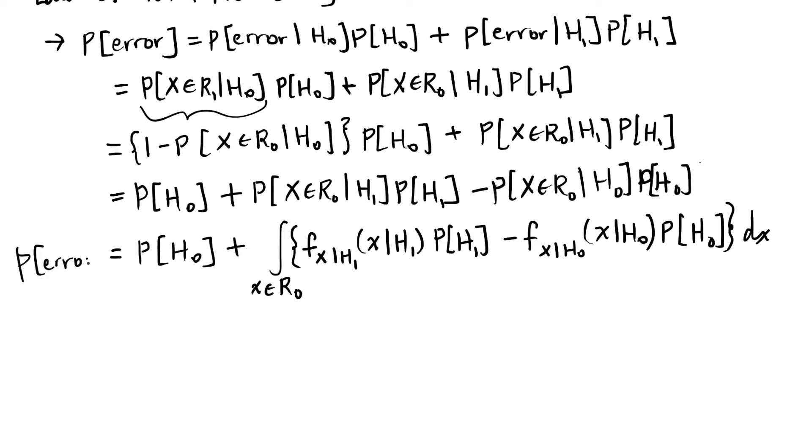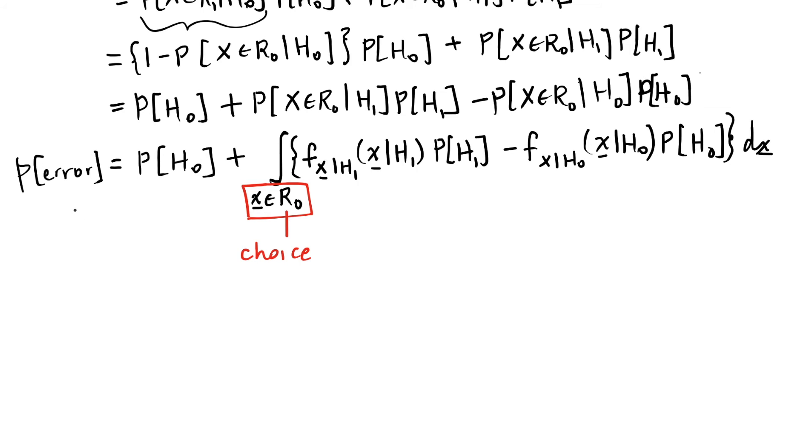We want to minimize this probability of error. And the only choice that we have here is this R0, we can only choose what R0 is. We can make a choice about where, what values of X we want to integrate. And I should note here that X is still a vector, so I should be writing it as a vector like this. And this might be a double integral or triple integral depending on the dimension of the vector X. In any case, I have an integral over a region of that value of the vector X.